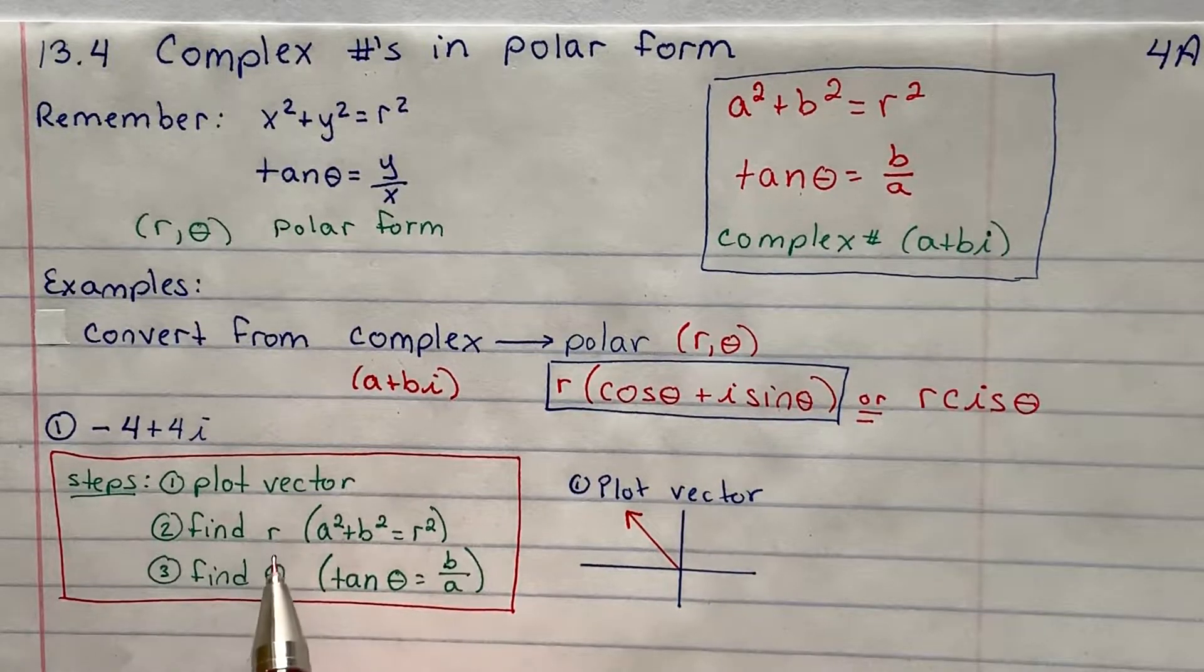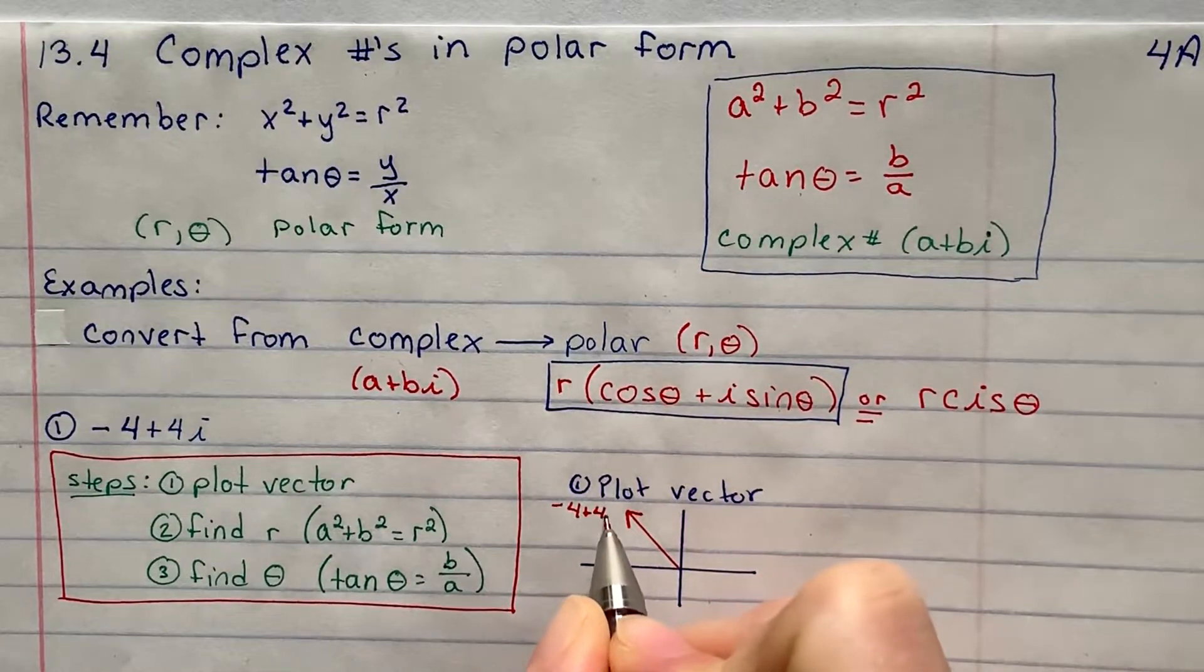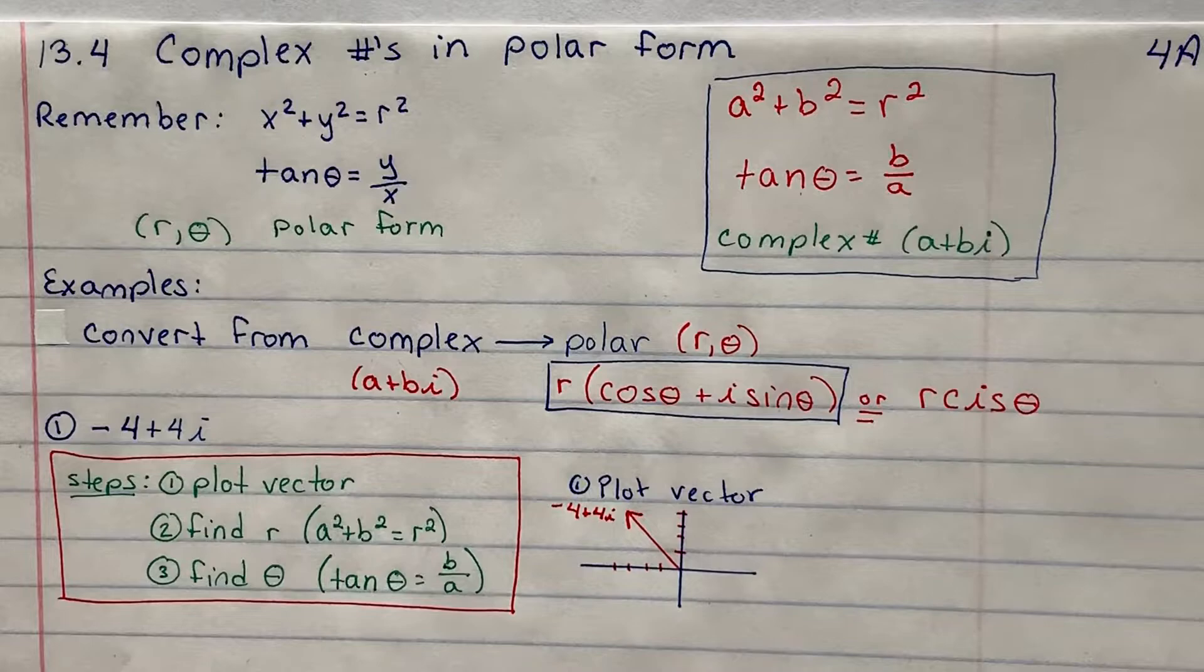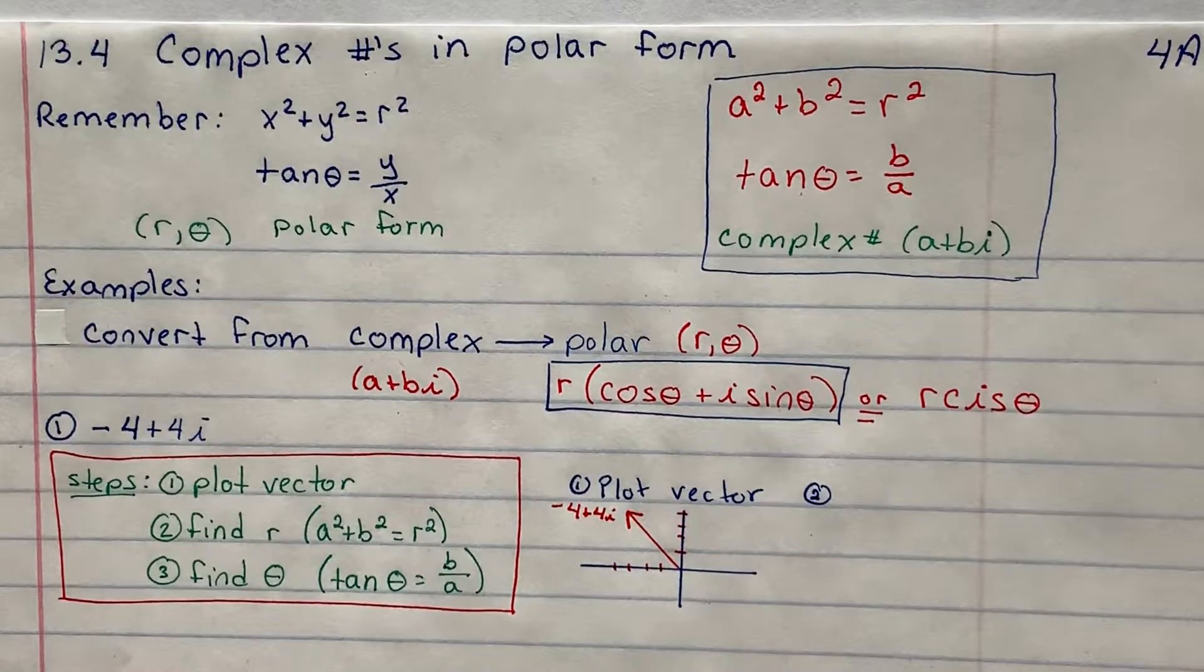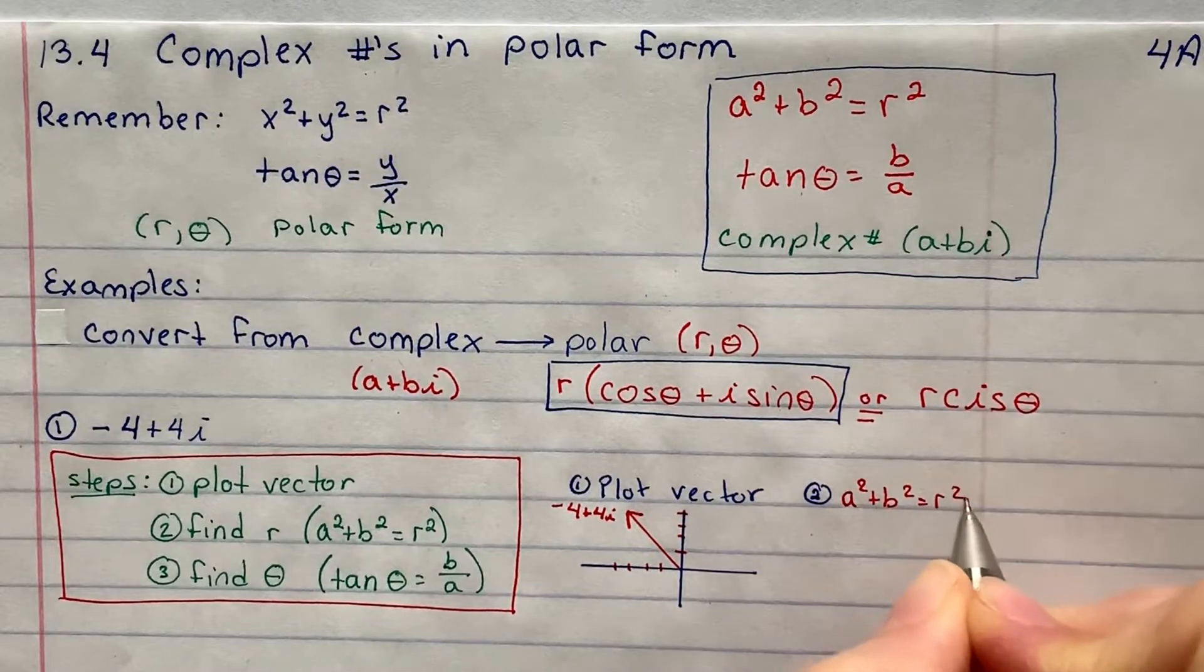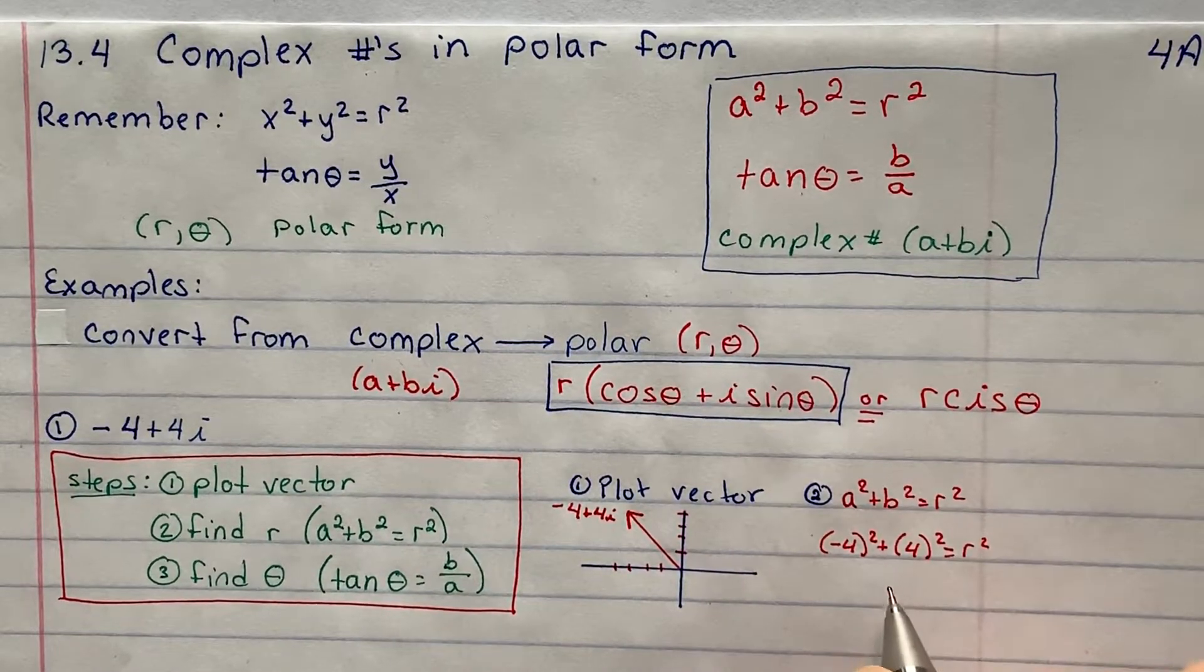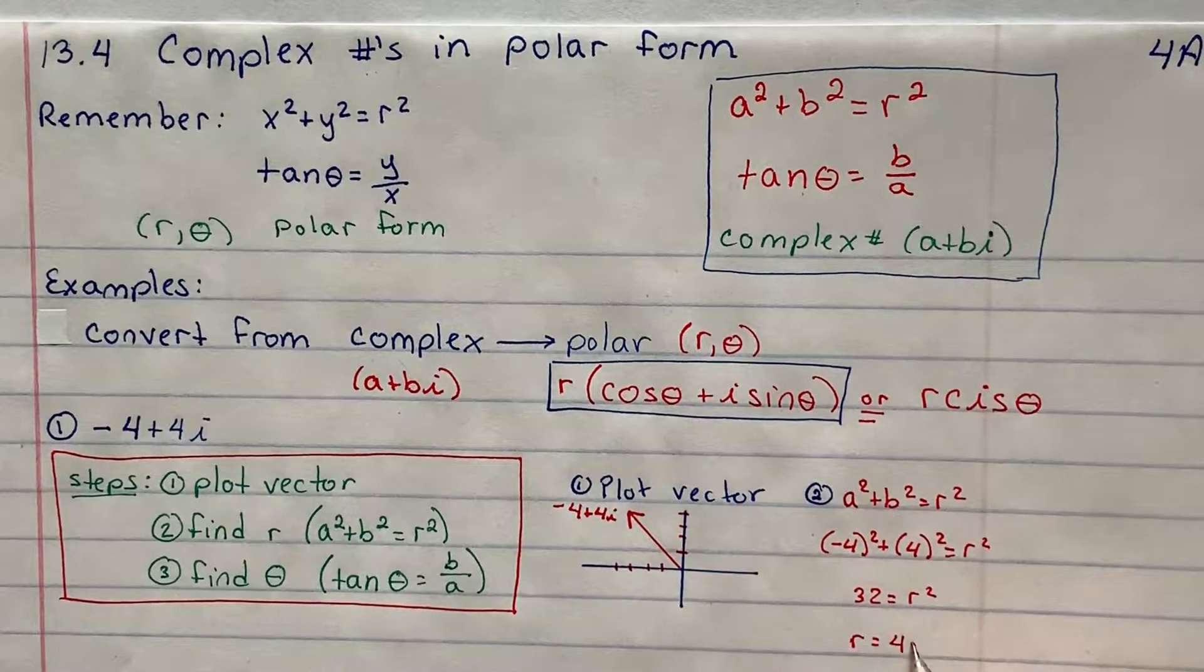So that was the first part. Part B here, or second part here, so let's figure out what r is. So again, this is the vector negative 4 plus 4i. If you want to get really technical, it's 1, 2, 3, 4 tallies out. 1, 2, 3, 4 tallies up. All right, so the second part here says to figure out what r is. And I'm going to use that formula, a squared plus b squared is equal to r squared. I know a is the number negative 4. I know b is the number positive 4. So 16 plus 16 is 32. So r is the number 4 radical 2.